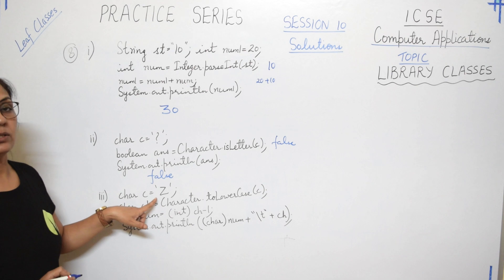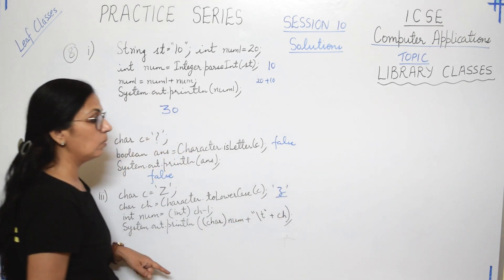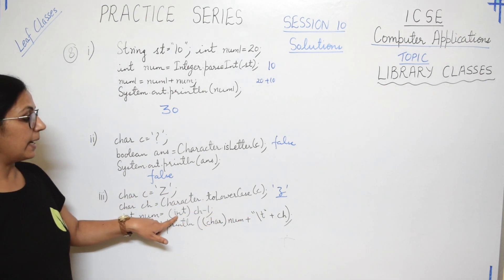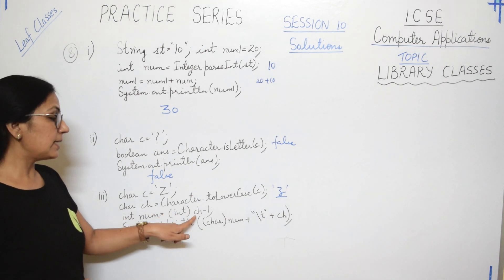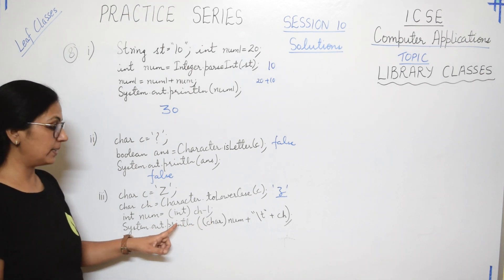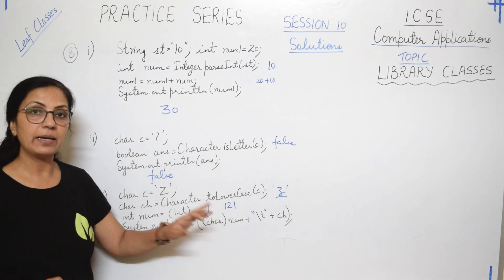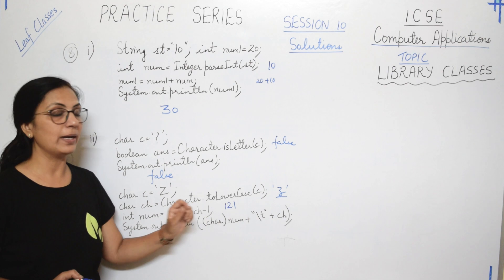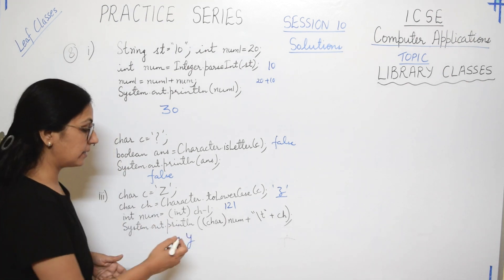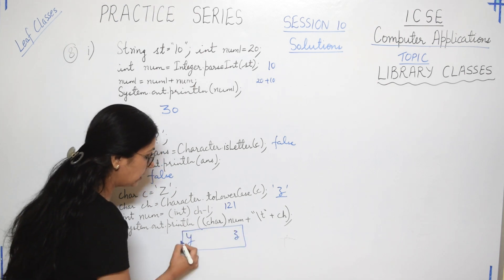Then we come to the next part. Char c equals to Z capital Z, ch equals to Character.toLowerCase - this function converts the given specified character into lowercase, so ch will have the value small z. Then num equals to int of ch minus 1. Now what is ch? ch is z. The ASCII value of lowercase z is 122, so 122 minus 1 is 121, so num will have the value 121. Now what we have to print? char of num - that means the character value of ASCII code 121, so that is lowercase y. Then you have backslash t within double quotes - that means it will print a tab character, so after tab space ch. What is the value of ch? It is lowercase z. So this will be your output. These types of questions are asked in the exam from Library Classes topic, so prepare this topic properly. Around 2 to 4 marks questions can be asked in section B from this topic.